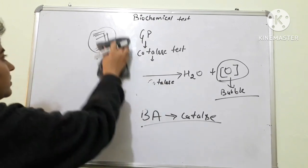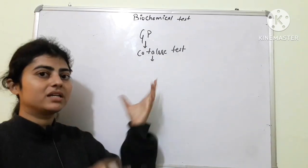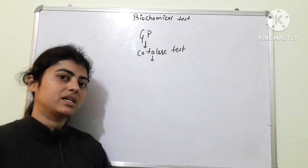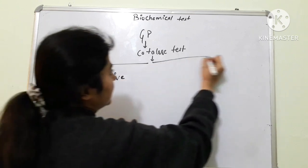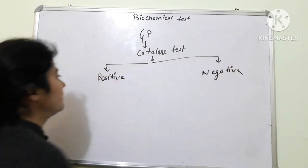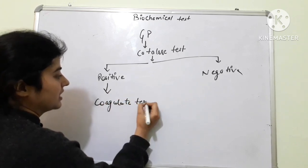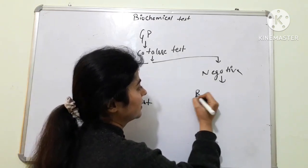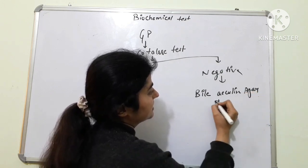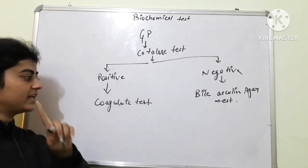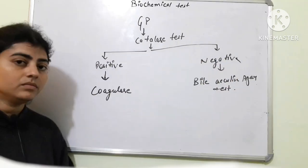It is not like you stop after catalase — there is further diagnosis and a confirmatory test. If catalase is positive, we will perform the coagulase test next. If catalase is negative, then we will perform the bile esculin agar test.